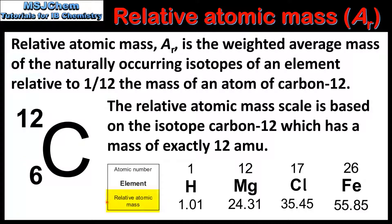The Relative Atomic Masses of elements can be found on a periodic table. Hydrogen has a Relative Atomic Mass of 1.01, Magnesium has a Relative Atomic Mass of 24.31, Chlorine has a Relative Atomic Mass of 35.45, and Iron has a Relative Atomic Mass of 55.85. As you can see, Relative Atomic Masses are not usually whole numbers because they are a weighted average of the naturally occurring isotopes of that element.